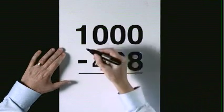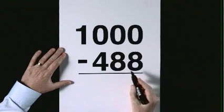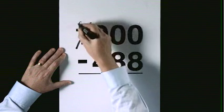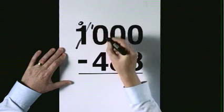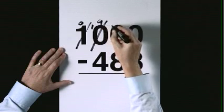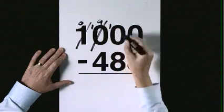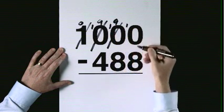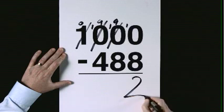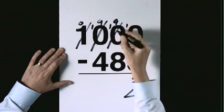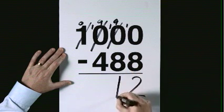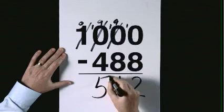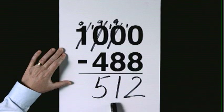1,000 subtract 488. Exchange. Exchange. Exchange. 10 take 8 is 2. 9 take 8 is 1. 9 take 4 is 5. The answer is 512.